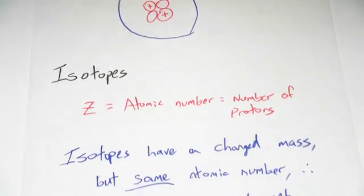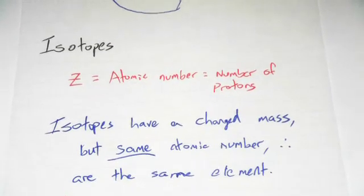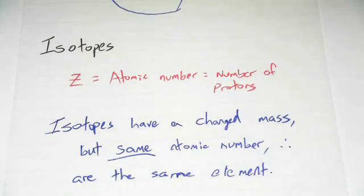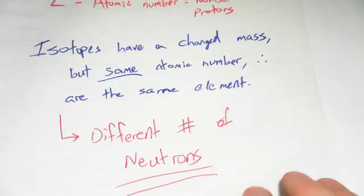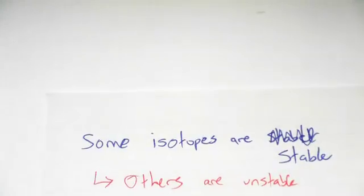Isotopes are variants on elements, so they have a changed mass number but the same atomic number, and they're the same element. So the only thing that's really different is that they have a different number of neutrons. Neutrons are the key in isotopes.